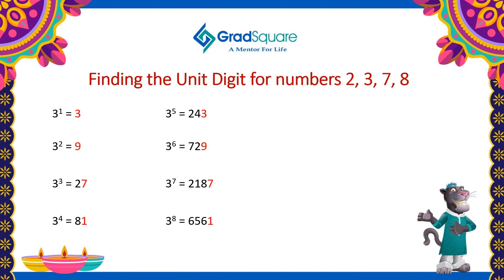Finding the unit digit of the numbers ending with 2, 3, 7 and 8. In the example of 3, it is visible that the powers of 3 follow a cyclical pattern after every fourth power. This is called cyclicity, and we are going to apply this cyclicity concept to find the unit digit of the numbers ending with 2, 3, 7 and 8.